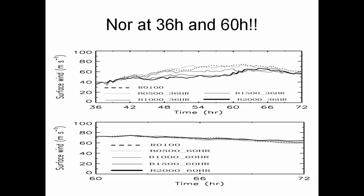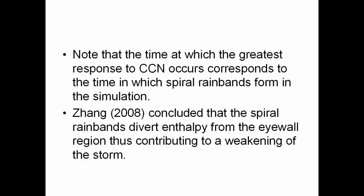At 36 hours, there's not a monotonic response anymore. At 60 hours, hardly any response. The time at which the greatest response occurs corresponds to when the spiral rain bands form. Hencel concluded that the spiral rain bands are basically diverting energy from the eye wall region, thus contributing to weakening the storm — but why the response isn't consistent, she still hasn't been able to tell me.